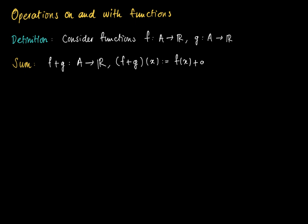Also we may form the product. The product of f and g is the function defined on A, and it's defined by just multiplying the images for some x: f times g of x.